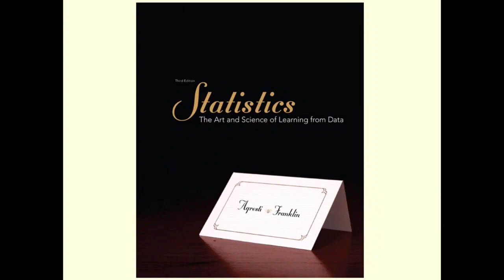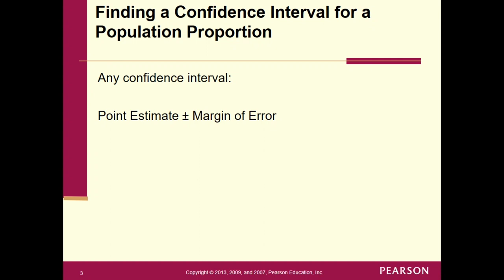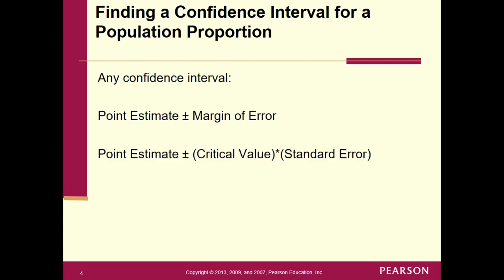Good day, stats students. Today we're going to talk about section 8.2 and we're going to construct a confidence interval for one population proportion. We learned in 8.1 that any confidence interval has a generalized formula: the point estimate plus and minus the margin of error.